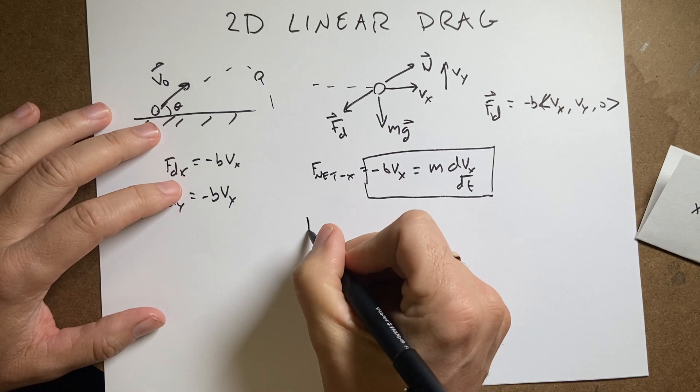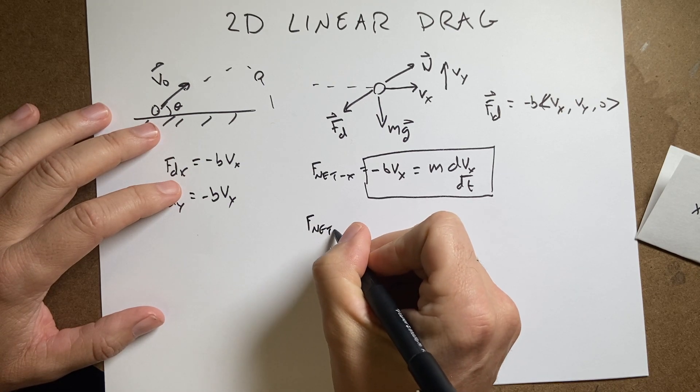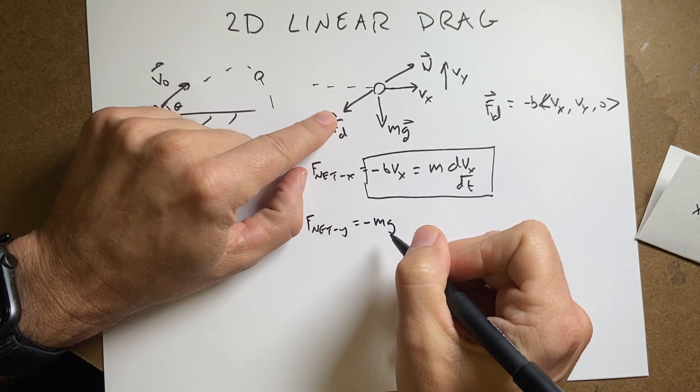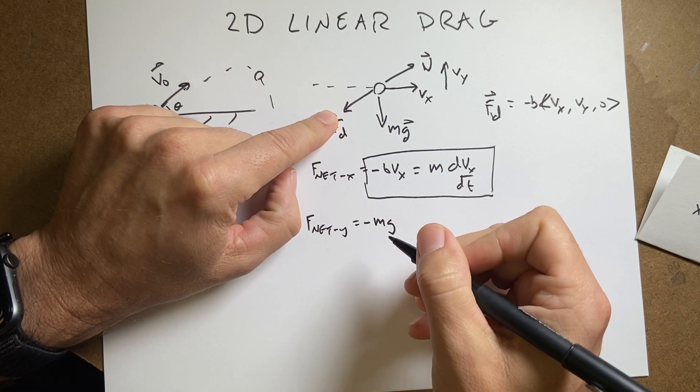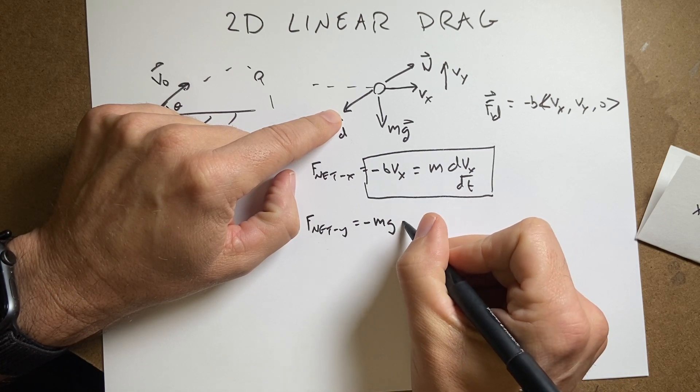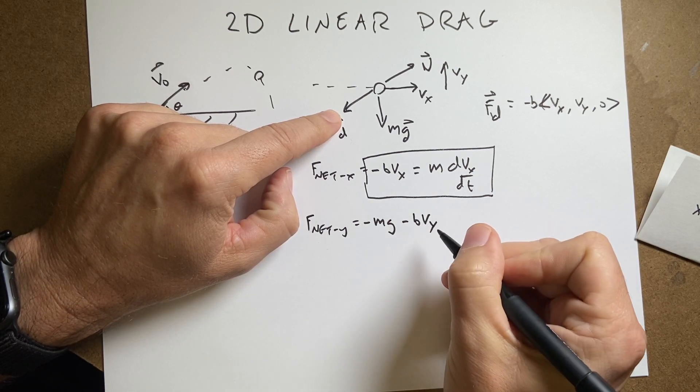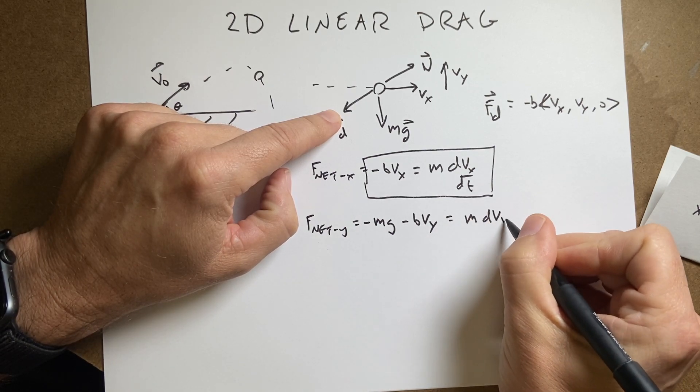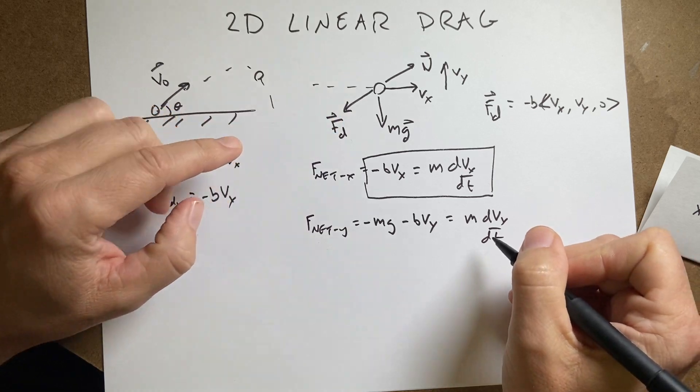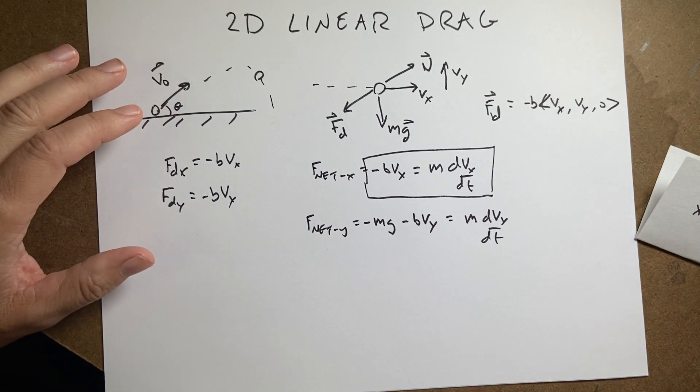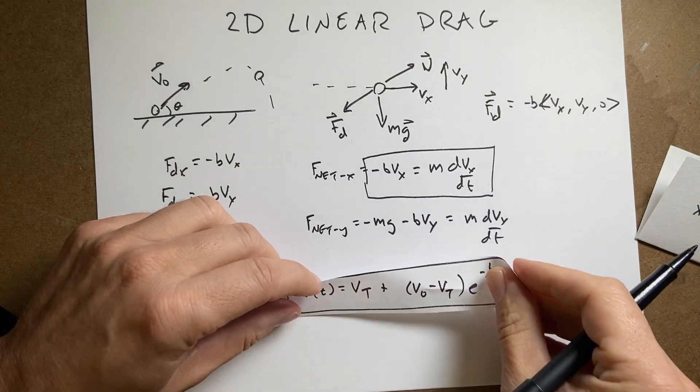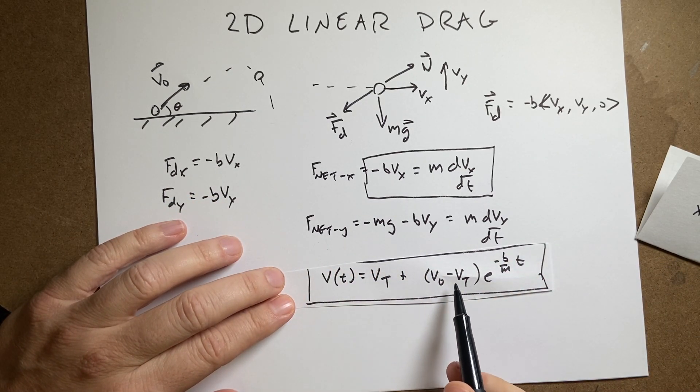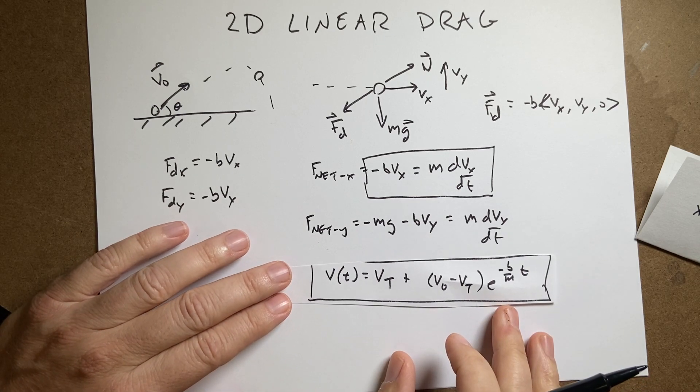Okay, now if I do the same thing in the Y direction, F net Y, I have a negative MG. And then I have this drag force, which is going to be negative BVy equals M dVy/dt. Oh, you know what? I already solved this problem too. Okay, so this is the, I just did this problem. This is the velocity as a function of time. I did this beforehand just because it was a little more complicated.